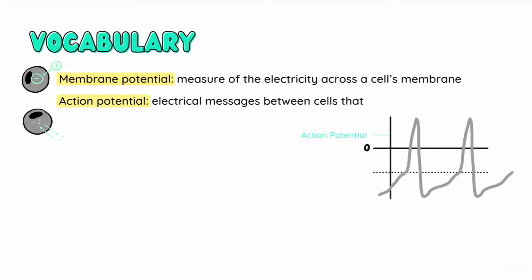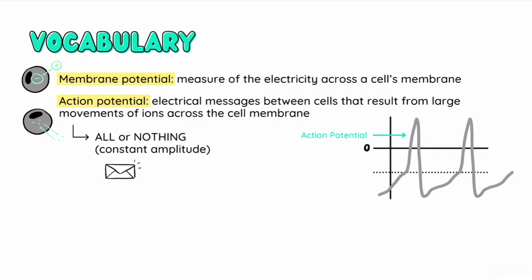Okay, let's start with some vocab. Membrane potential is a measure of the electricity across a cell's membrane, most simply calculated as the difference in electrical potential between the inside and outside of the cell. Action potentials are the electrical messages sent between cells that result from large fluctuations in the membrane potential of a given cell from a rhythmic flow of ions. Action potentials are all or nothing, which means you either have a full one or you don't have one at all. There is no such thing as a small or big action potential.